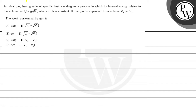Hello, let's read this question. An ideal gas having ratio of specific heat gamma undergoes a process in which its internal energy relates to the volume as U equals alpha root V, where alpha is a constant. If the gas is expanded from volume V1 to V2, the work performed by the gas is?